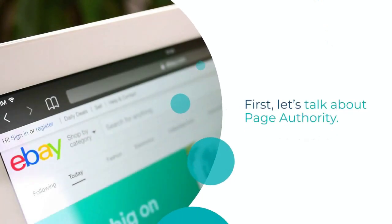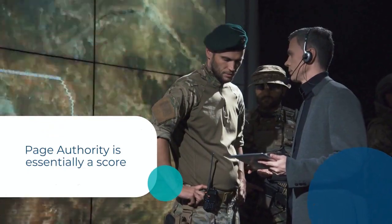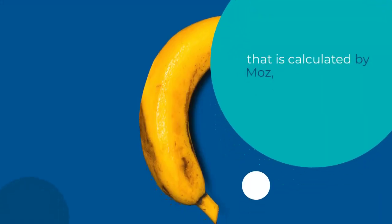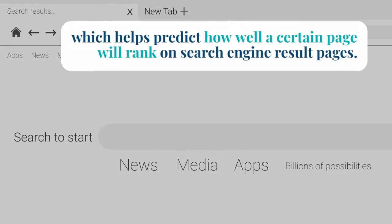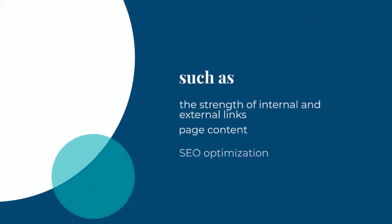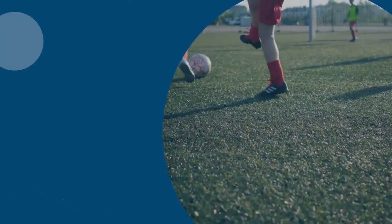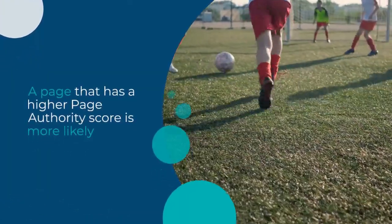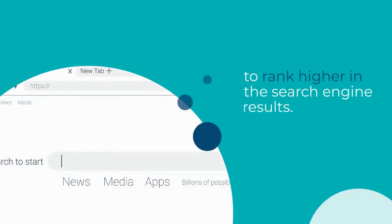First, let's talk about Page Authority. Page Authority is essentially a score that is calculated by Moz, which helps predict how well a certain page will rank on search engine result pages. This score is based on multiple factors, such as the strength of internal and external links, page content, and SEO optimization. A page that has a higher Page Authority score is more likely to rank higher in the search engine results.